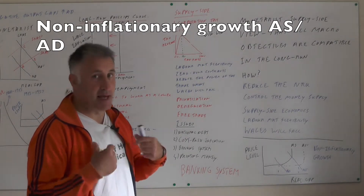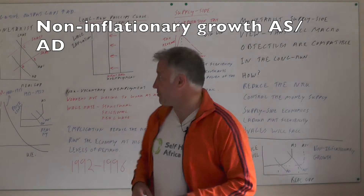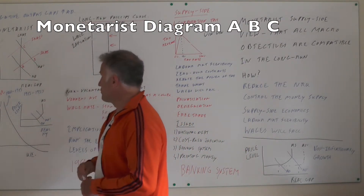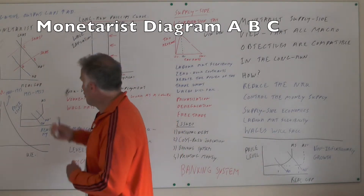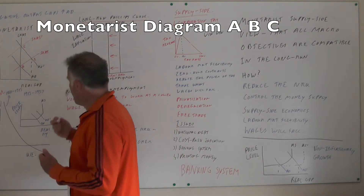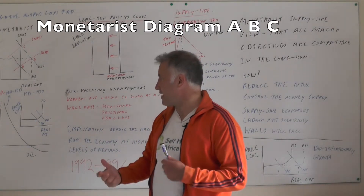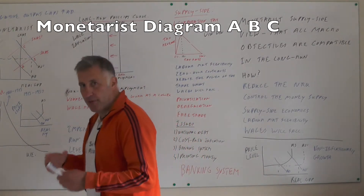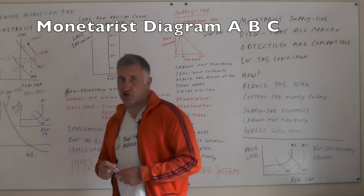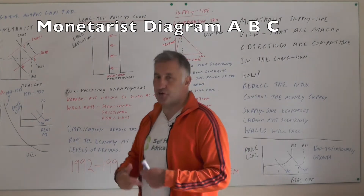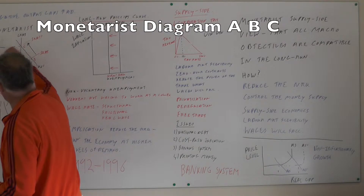The key thing about monetarism for me is how important supply-side economics is. Starting with the monetarist diagram moving from A, B, and C: if you increase aggregate demand you get a rise in real GDP but also a rise in prices, so there is a short-run trade-off between inflation and unemployment. However, as the labour market tightens workers ask for higher wages, shifting SRAS to a new SRAS, so in the long run increasing AD is pointless — you end up at the same level of national income but with a much higher price level.